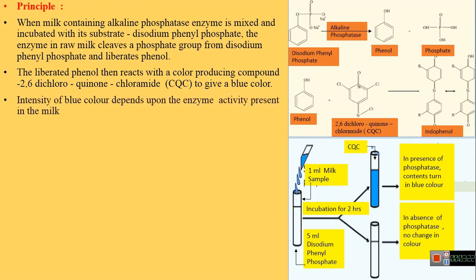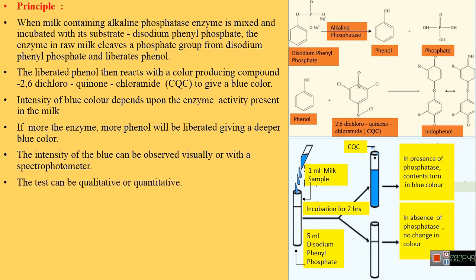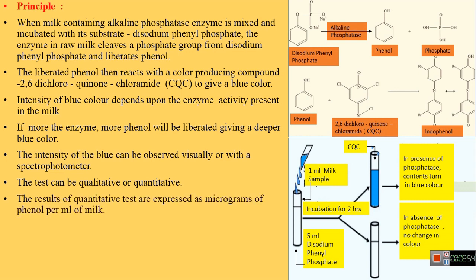The liberated phenol reacts with a color-producing compound CQC, that is 2,6-dichloroquinone chloramide, and gives a blue color. The intensity of blue color depends upon the amount of enzyme in the raw milk — if more enzyme activity is present, the amount of phenol liberated will be more and the intensity of color will be more, that is it will be deep blue in color. The intensity of the color can be observed visually or with a spectrophotometer. This test can be carried out qualitatively or quantitatively and the results of the quantitative test are expressed as micrograms of phenol liberated per ml of the milk sample.